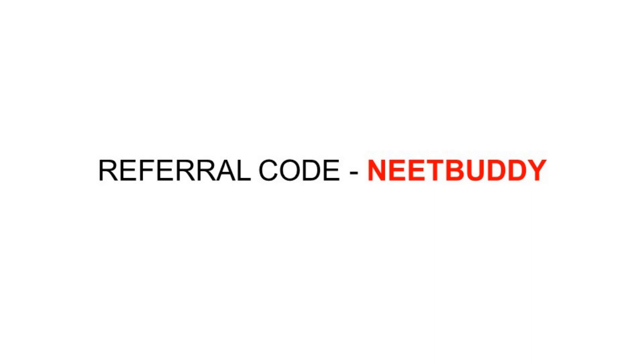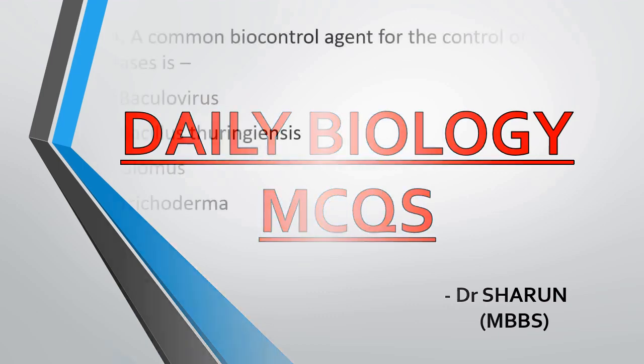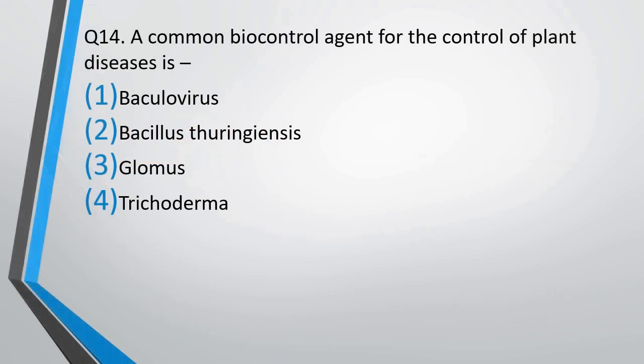That's a lot for promotion. Without wasting much time, let's get started. Question number 14: A common biocontrol agent for control of plant diseases is — Baculovirus, Bacillus thuringiensis, Glomus, or Trichoderma? The correct answer is option 4, that is Trichoderma.